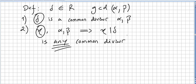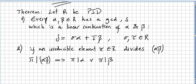This is more or less obvious from basic number theory, but we are going to have some surprises here. So let R be a principal ideal domain. Every alpha and beta in the principal ideal domain has a greatest common divisor delta, and this delta is a linear combination of alpha and beta: delta equals sigma times alpha plus tau times beta, where sigma and tau are in the ring. Furthermore, if an irreducible element pi divides the product of alpha and beta, then either pi divides alpha or pi divides beta.